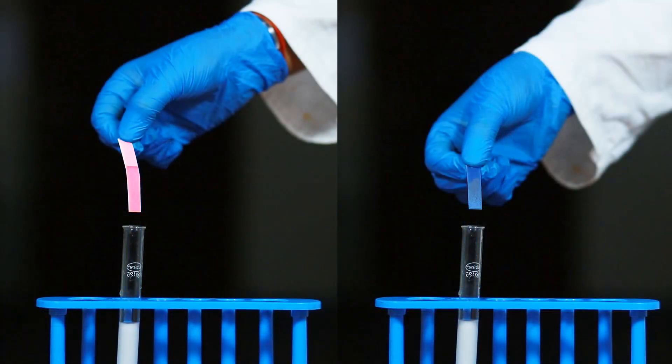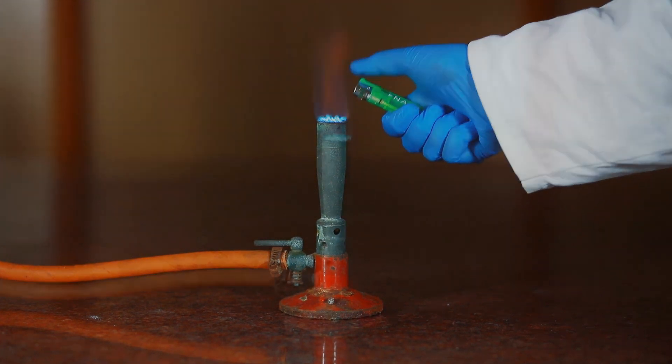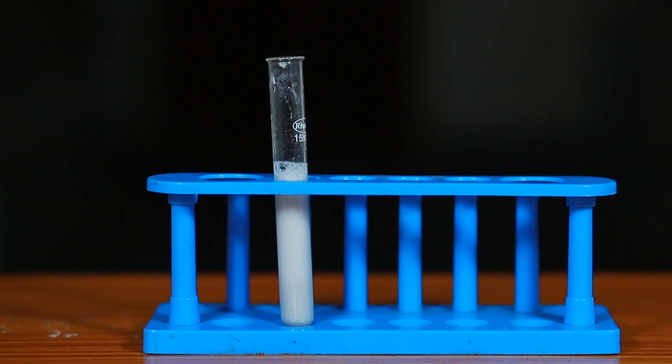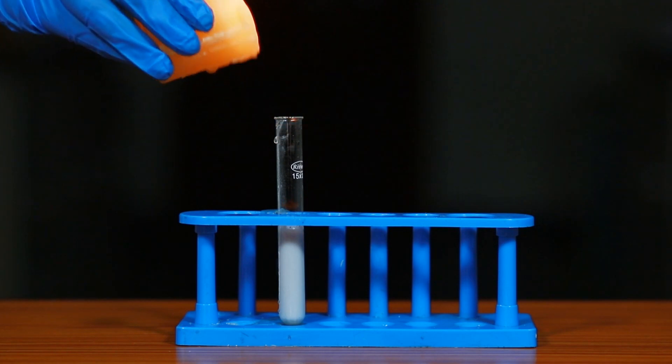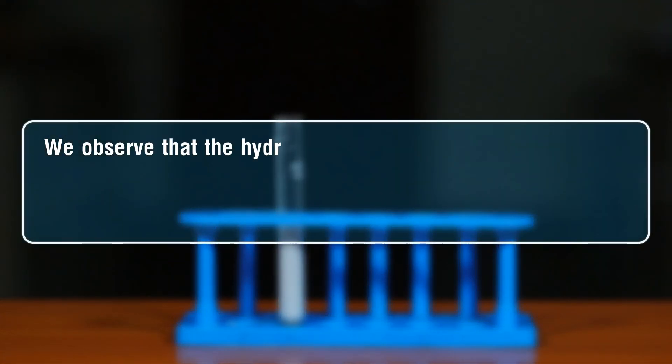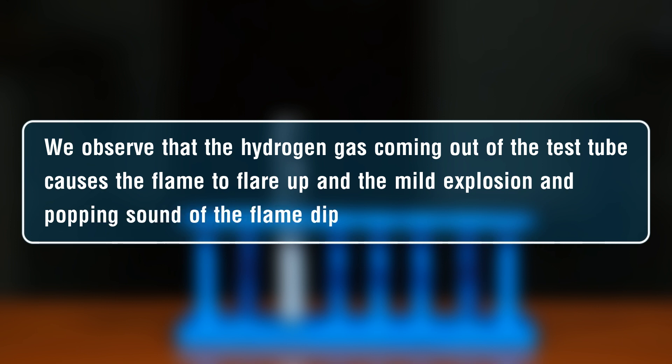Next we will perform the combustion test. Heat the test tube using a Bunsen burner and observe the effervescence and colorless gas coming out through the test tube mouth from the reaction mixture. Bring the lighted candle to the mouth of the test tube when the colorless gas is liberating. We observe that the hydrogen gas coming out of the test tube causes the flame to flare up with a mild explosion and popping sound as the flame goes out.